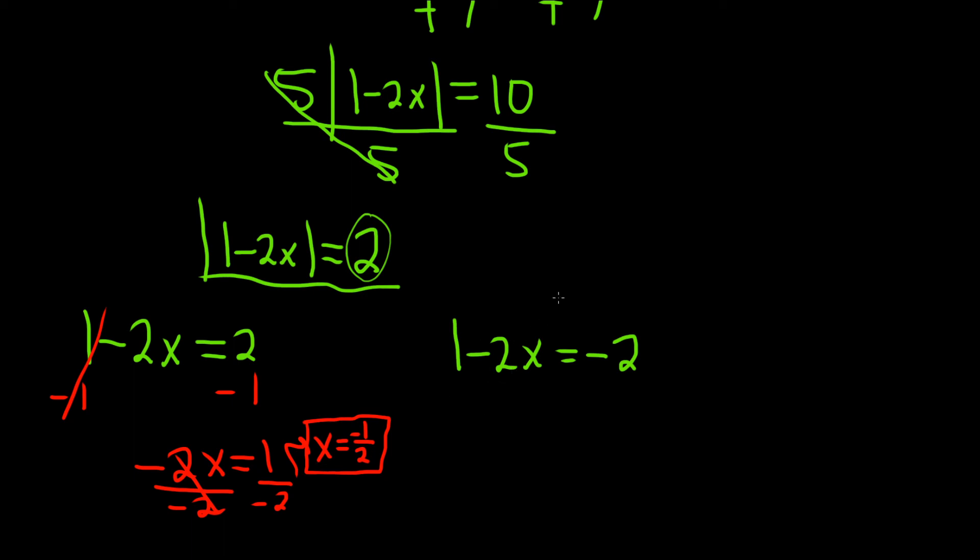Then over here we do the same thing. Minus 1, minus 1. Notice here it'll be minus 2x. And then minus 2 and minus 1 is minus 3. Then we divide by the negative 2. So minus and minus is plus. So we get x equals 3 over 2. And that would be the other answer to this absolute value equation.